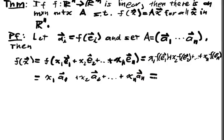all the way up to xn an. But this is just matrix multiplication by A times the x vector. And that's it, that's the theorem, that's the proof.